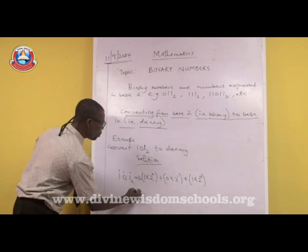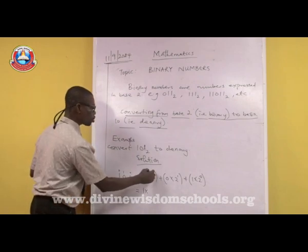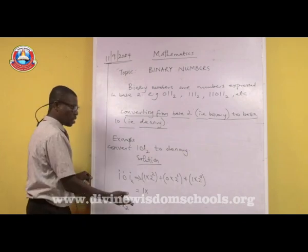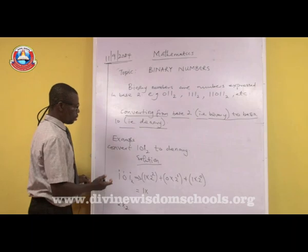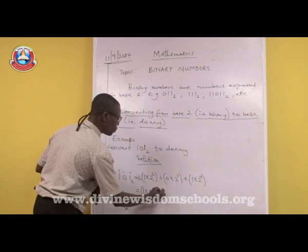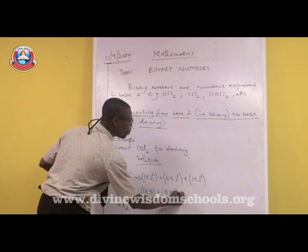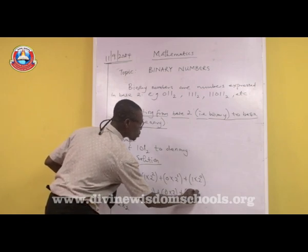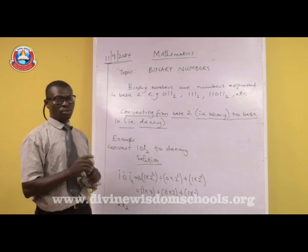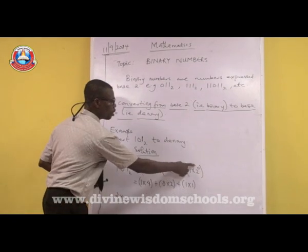Now you simplify it further. 1 times 2 to the power of 2 gives you 4. Then 0 times 2 to the power of 1 — that is 2 in 1 place, which is 2 — gives you 0. And anything raised to the power of 0 is always 1 mathematically, so 1 times 1 gives you 1.